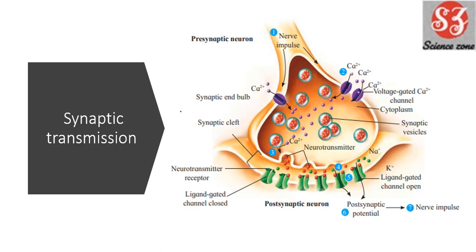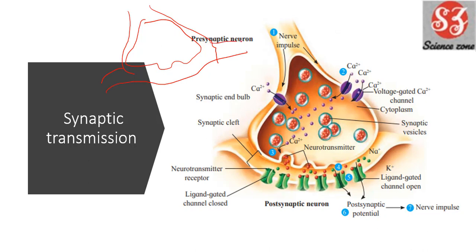Next is Chapter 9. The first is synaptic transmission. This diagram you should learn to draw roughly, because it will come in long answer questions. You can draw it roughly as shown — you don't need to do heavy shading as in the textbook. Just draw it roughly; it's a long answer question diagram.